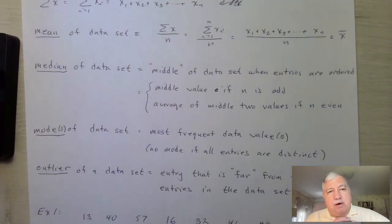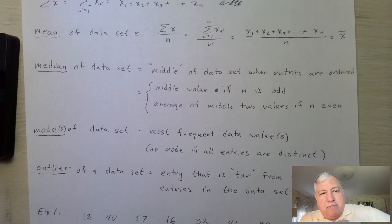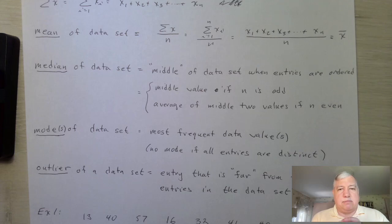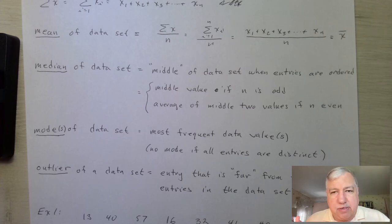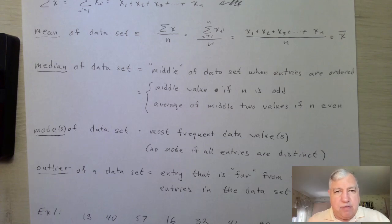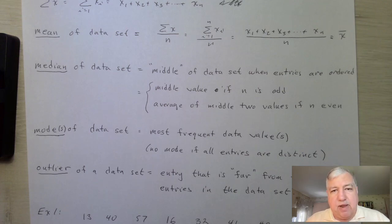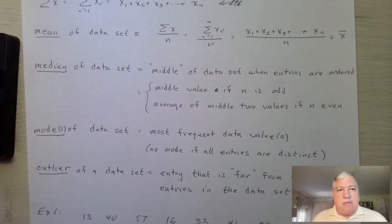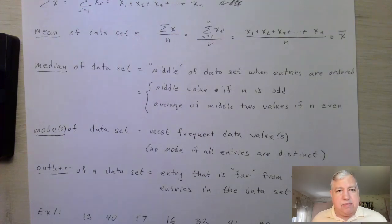The median of a data set is another way of measuring central tendency. When you think median, think middle — it's the middle of the data set if we were to order all the entries. Basically, half the entries are less than the median and half are greater. If we have an odd number of entries, the median is just the middle value. If we have an even number of entries, we take the two middle values and take their average. So the median may or may not be an actual data value in the set, depending on the size.